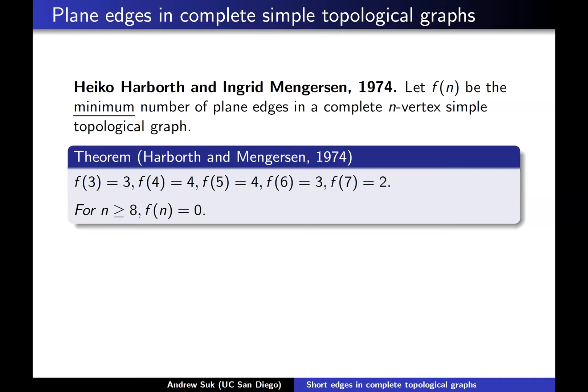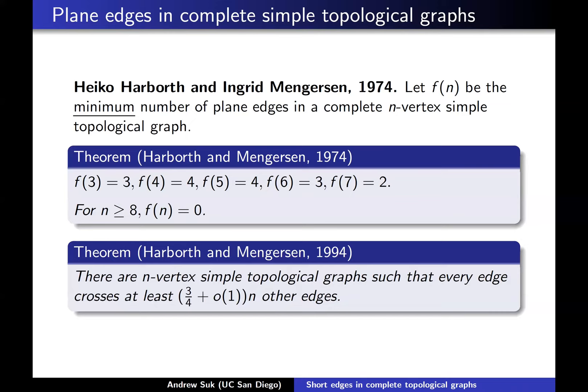Moreover, what they showed roughly 20 years later is that not only are you not guaranteed plane edges, but there are drawings of the complete n-vertex simple topological graph in which every edge crosses at least a linear number of other edges. It's well known that in the complete n-vertex simple topological graph, on average each edge will cross on the order of n² other edges. It was widely believed at the time that even though on average each edge crosses n² other edges, you should be able to find a special edge that crosses far fewer edges.